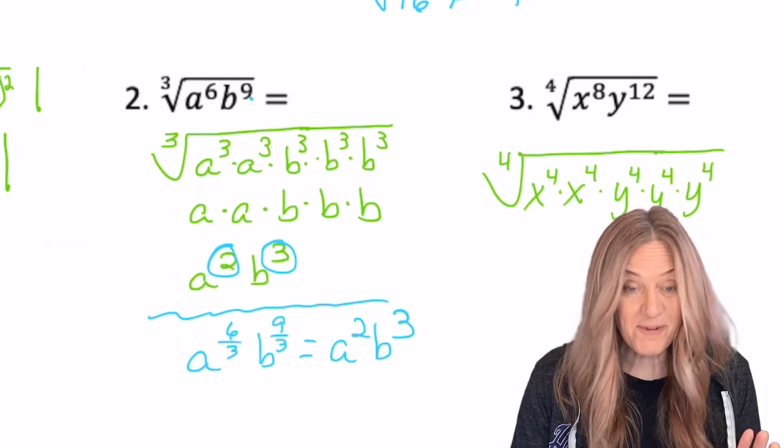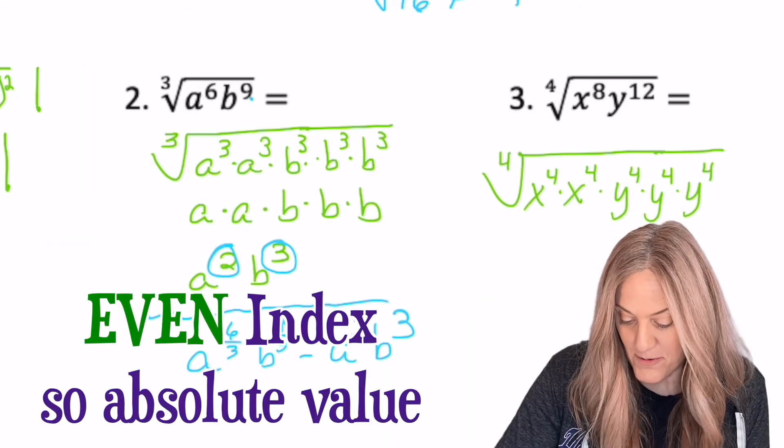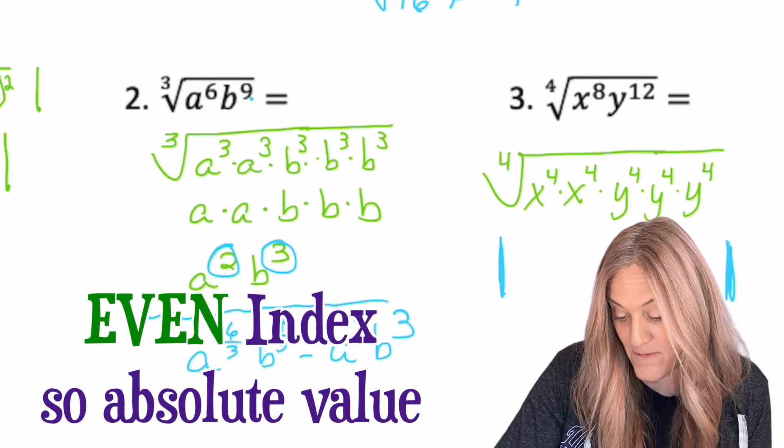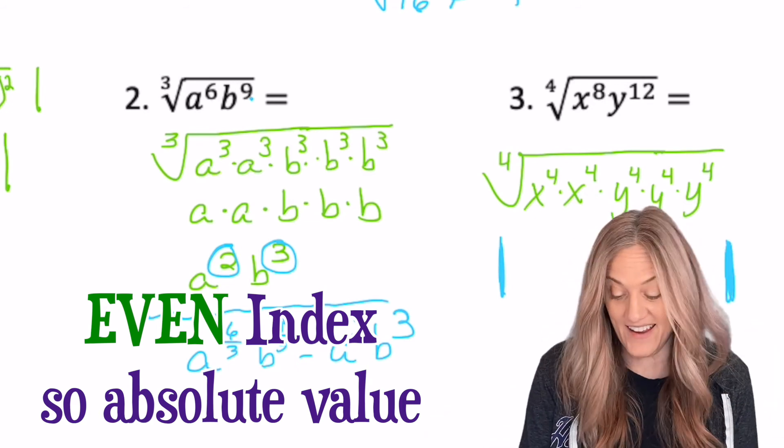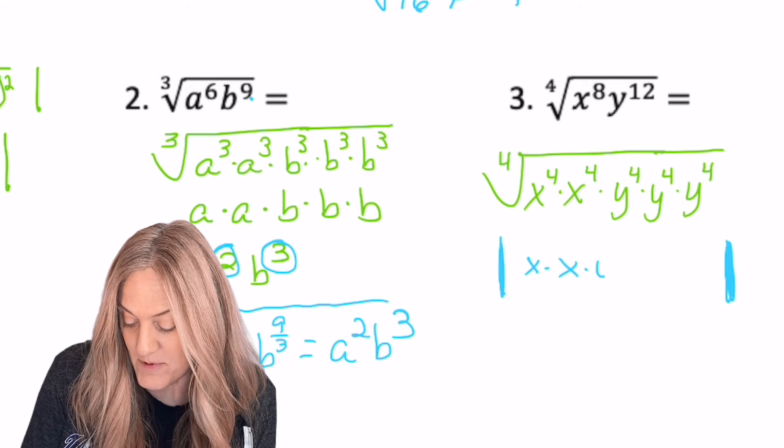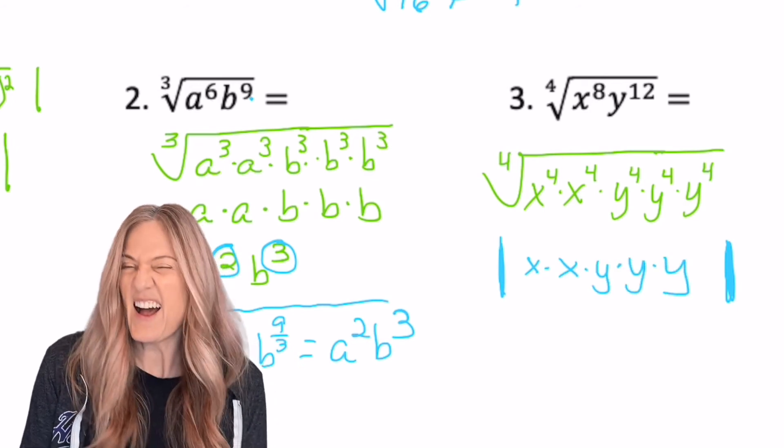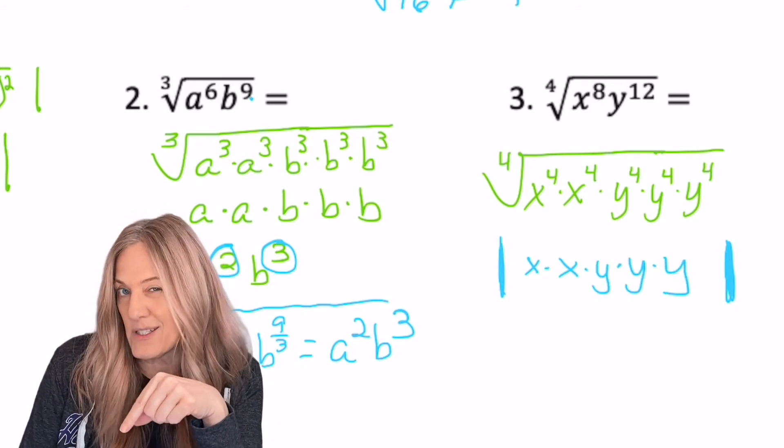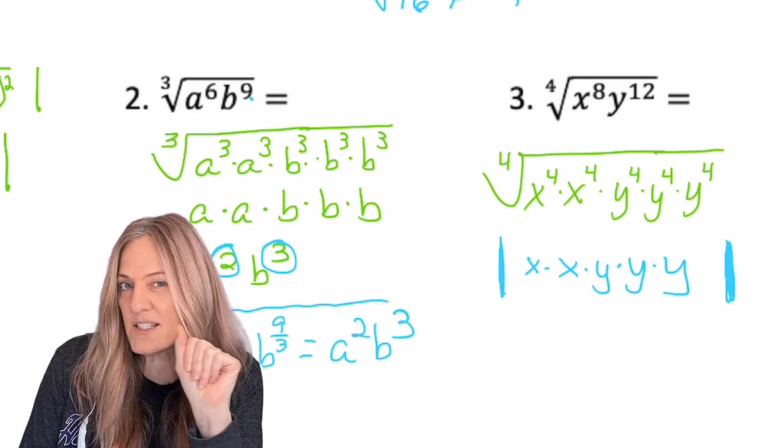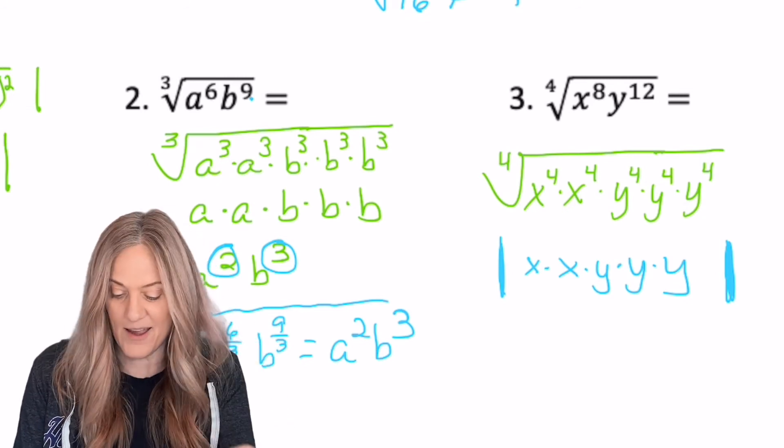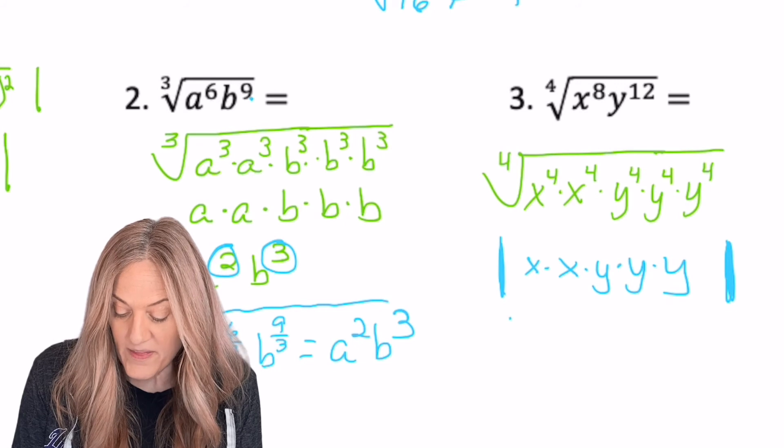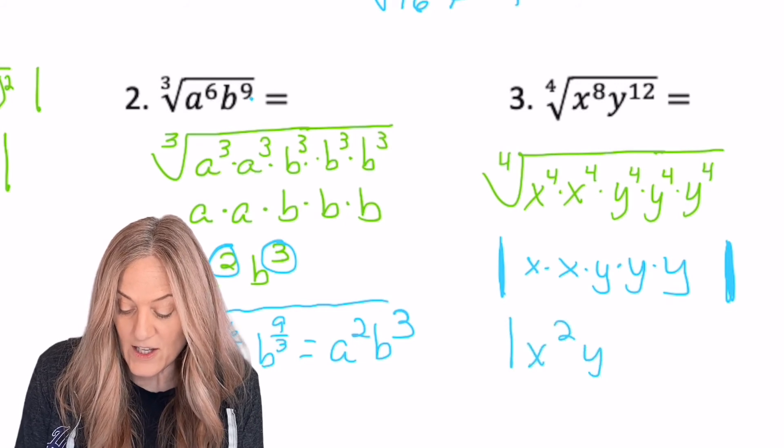Oh my gosh, I almost forgot. It's an even root. I'm going to throw those absolute value signs out there right now because otherwise I might forget. So x times x times y times y times y. I bet you realize I don't actually do it this way in the long run,